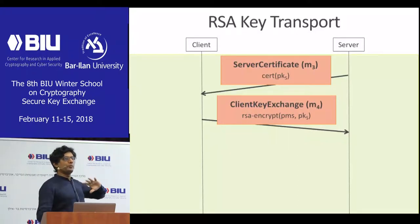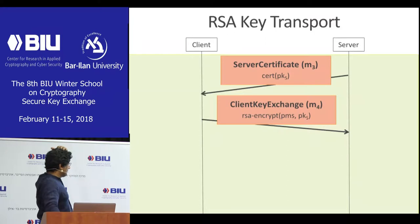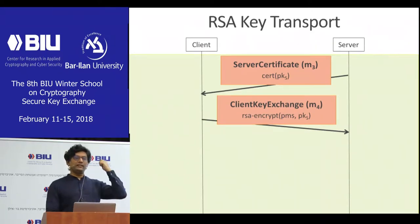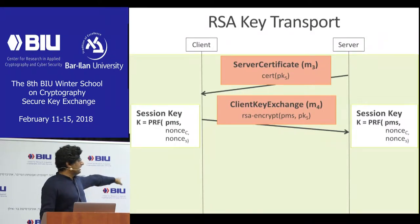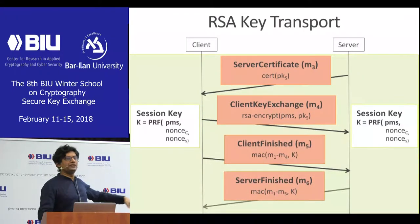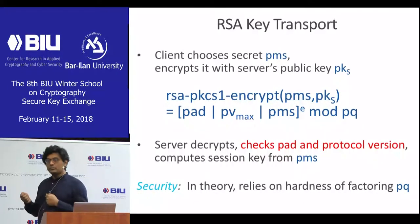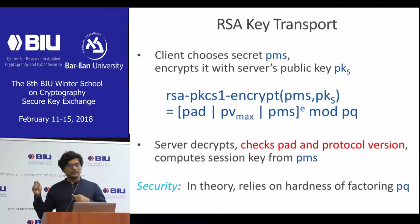There are two most popular key exchanges in TLS. Classically the most popular was RSA key transport. The server sends a certificate with an RSA public key for encryption. The client picks a pre-master secret (PMS), encrypts it for the server, and sends it over. Since only the server can decrypt the PMS, both parties derive the session key using some PRF and the two nonces exchanged. The RSA encryption mode used in TLS up to TLS 1.2 is RSA PKCS #1 v1.5.